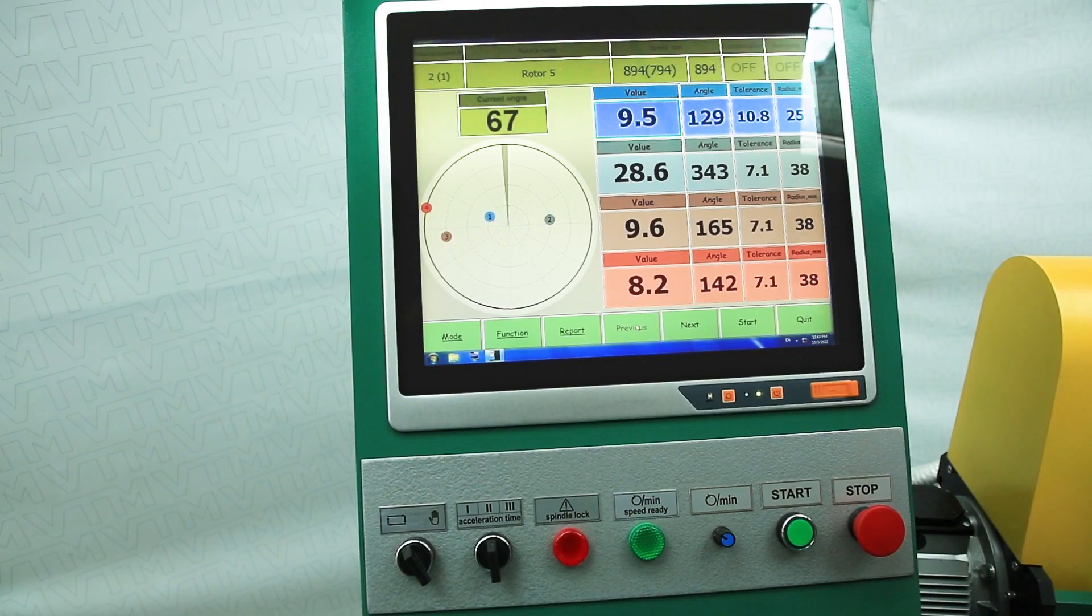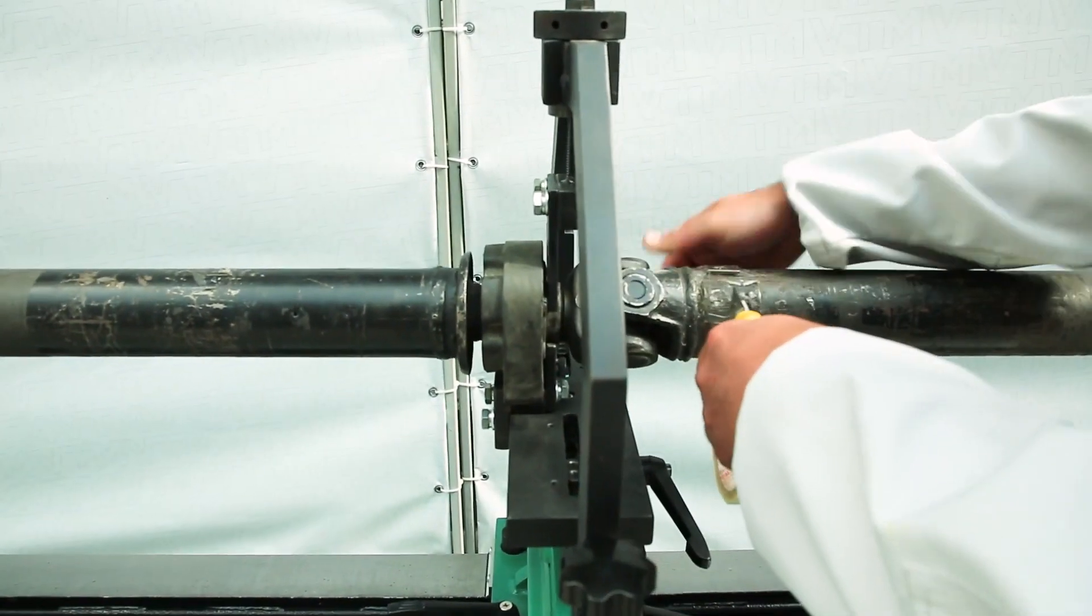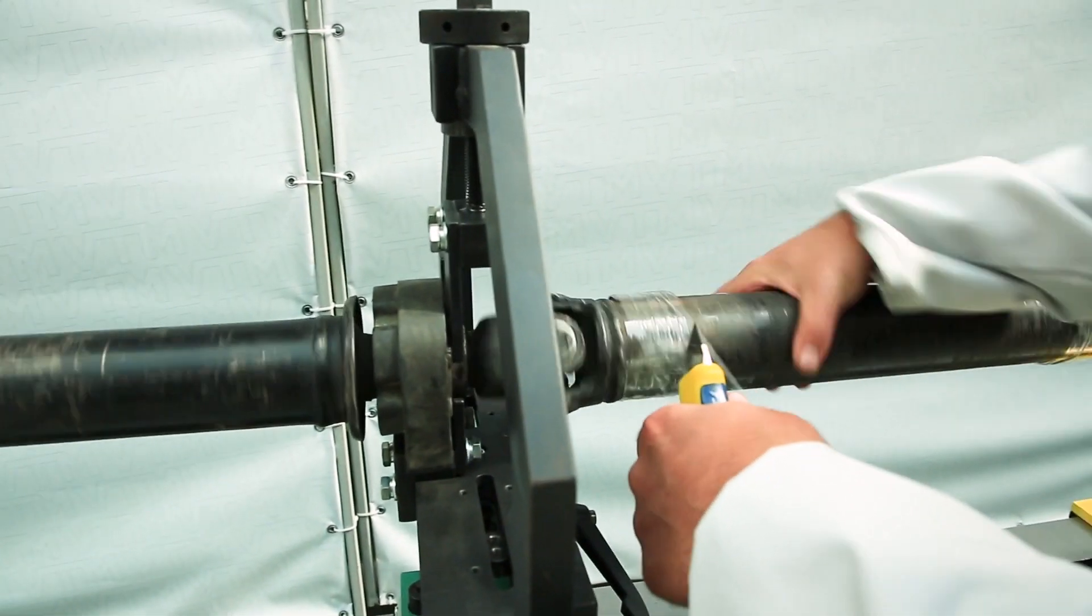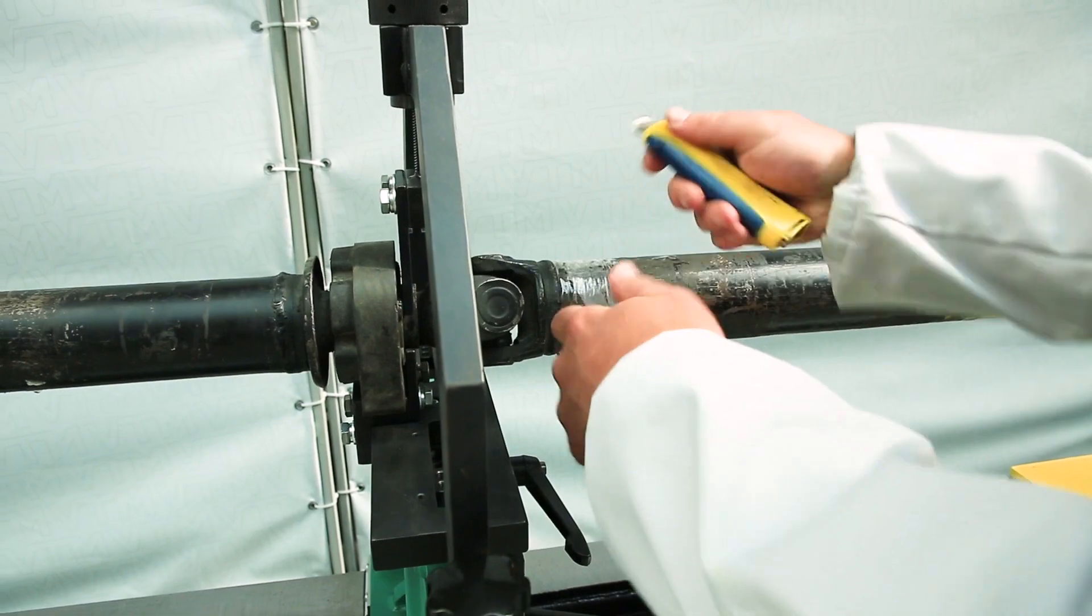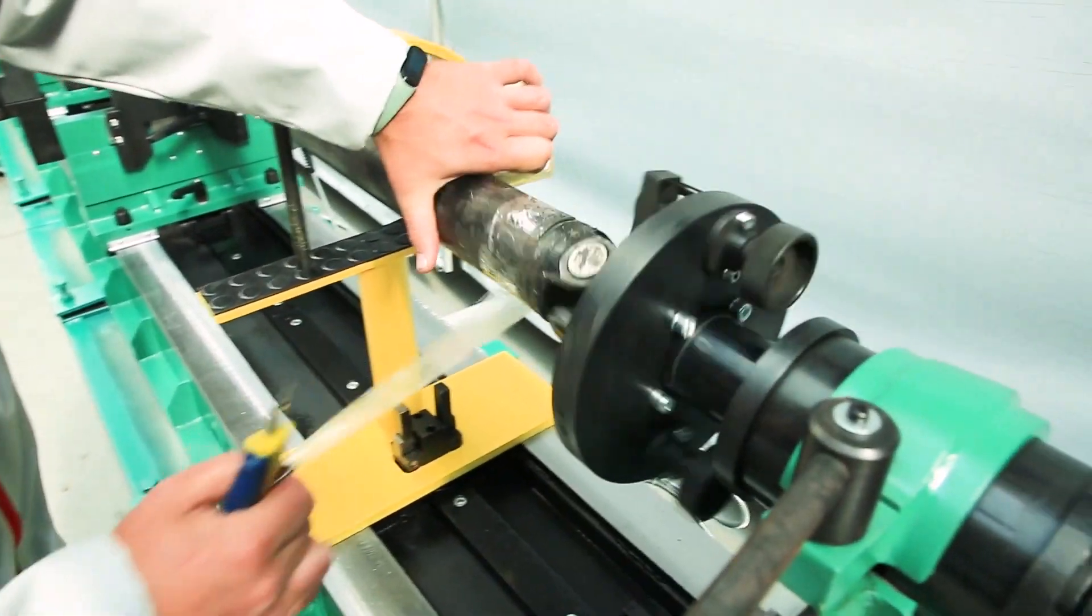Next, we bring the third plane under the correction zone. We take a pre-prepared weight.